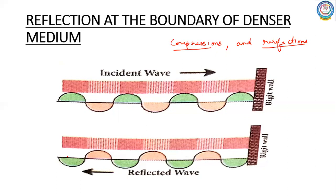When a sound wave from a source moves through air, the air molecules create areas of high and low pressure. When the wave moves forward it pushes neighboring molecules, creating an area of very high pressure called compression. When the wave moves backward, it creates an area of low pressure called rarefaction. So longitudinal waves travel in a medium in the form of compressions and rarefactions.